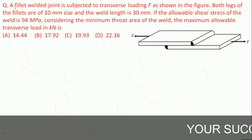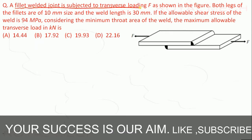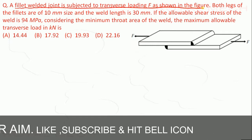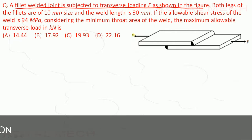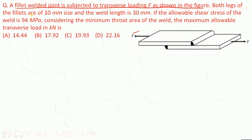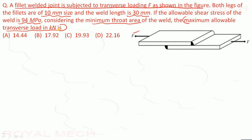A fillet welded joint is subjected to transverse loading as shown in the figure. Both legs of the fillet are 10 mm and the weld length is 30 mm. If the allowable shear stress of the weld is 94 MPa, considering the minimum throat area, the maximum allowable transverse load in kilonewtons is to be found from the given four options.